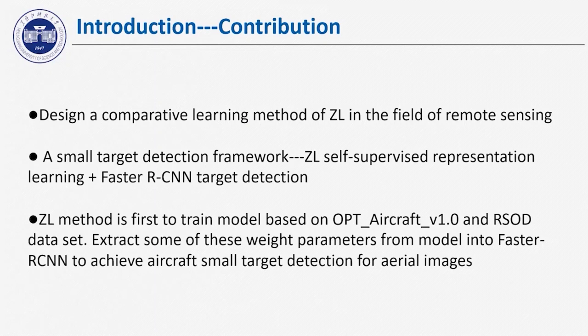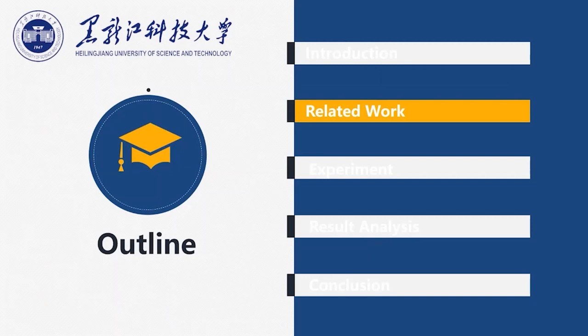In this work, we have three contributions. First, we design a contrastive learning method, ZL, in the field of remote sensing. Secondly, we present a small target detection framework following the process of ZL's self-supervised learning with re-positional learning and fast aircraft target detection. Then, the ZL contrastive learning method is used to train a model based on the OPT aircraft dataset to achieve high accuracy in classifying aircraft types. Based on the ISOD dataset and Faster RCNN, we achieve aircraft small target detection for aerial images.